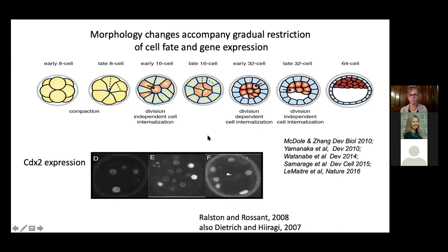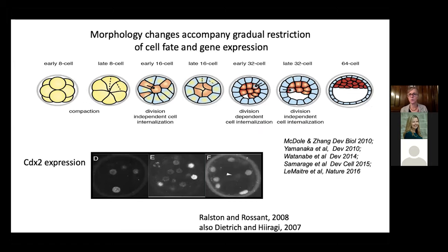It's become apparent that morphology is really important, and there are morphological changes that accompany this gradual restriction of cell fate and gene expression. The first event is compaction at the eight-cell stage, where cells become closely adherent, driven by E-cadherin. They start to become polarized, and all your favorite cell polarity factors become localized apically and basally. As they divide, the outer polarized cells make a tight junctional coupled epithelium, enclosing a group of cells that will form the inner cell mass. During that process, we can map gene expression of lineage-specific genes in association with these morphological events.